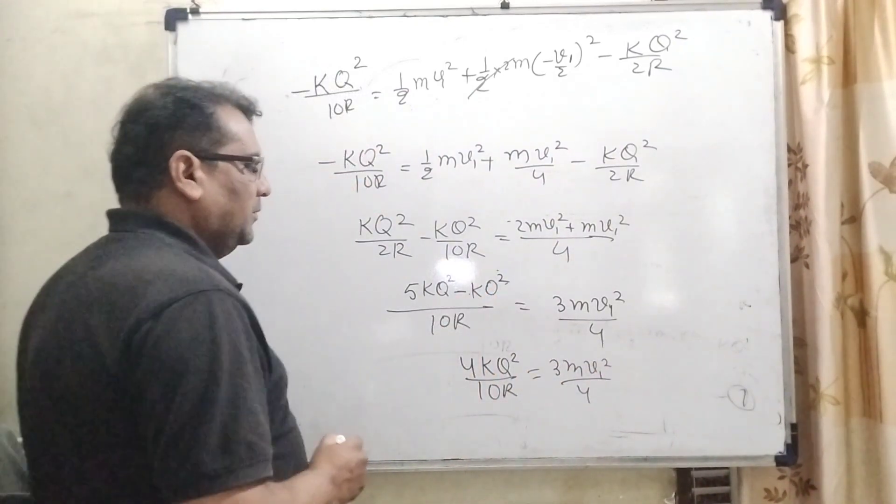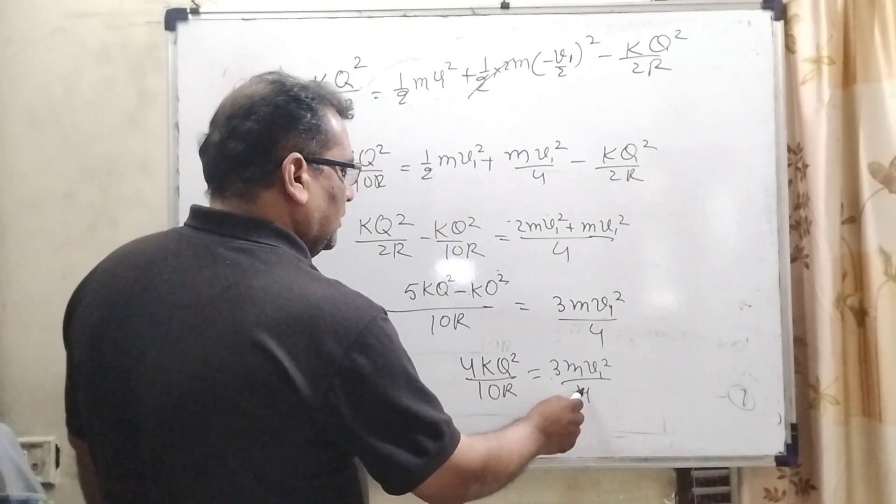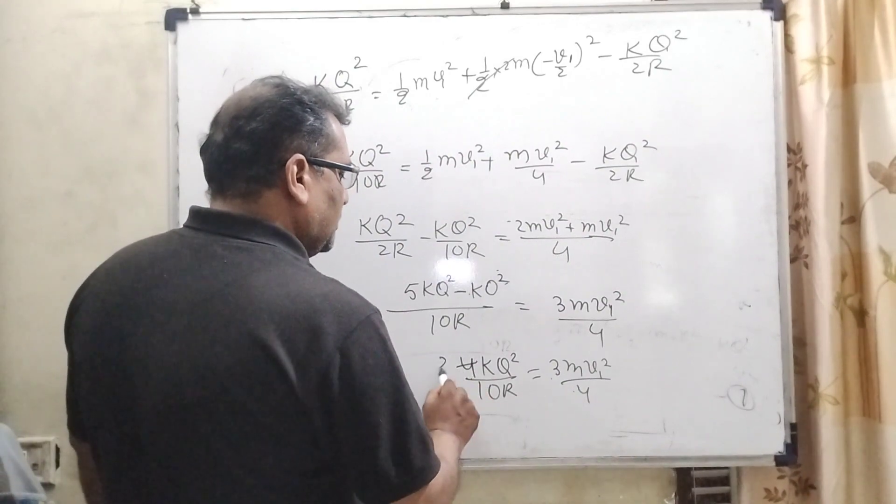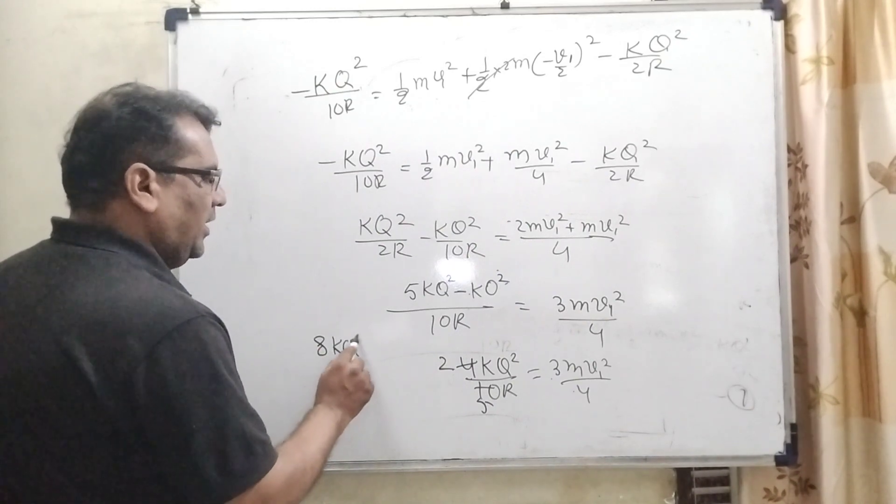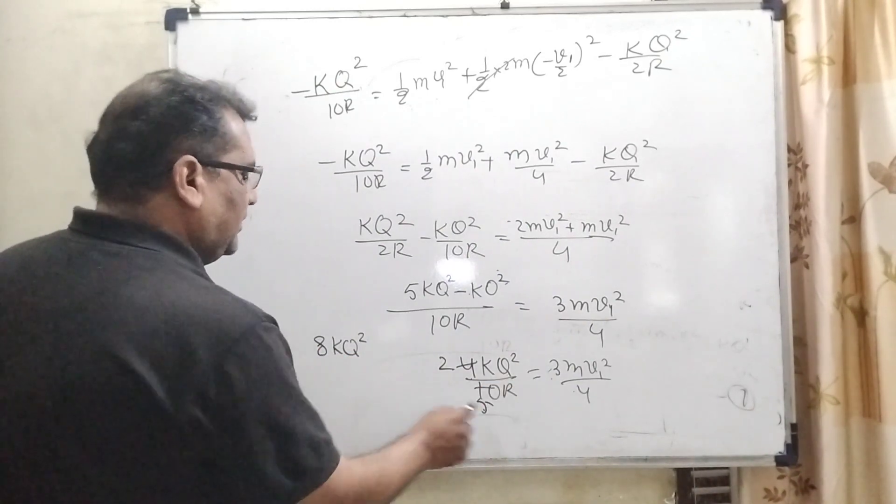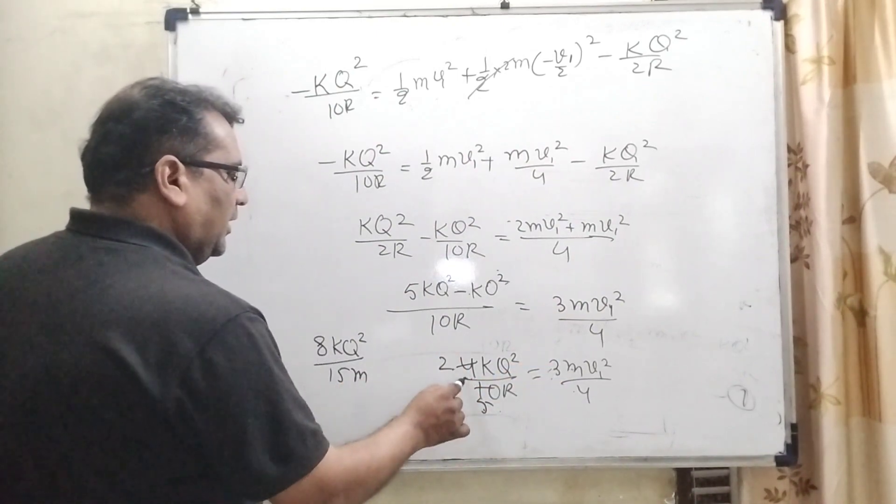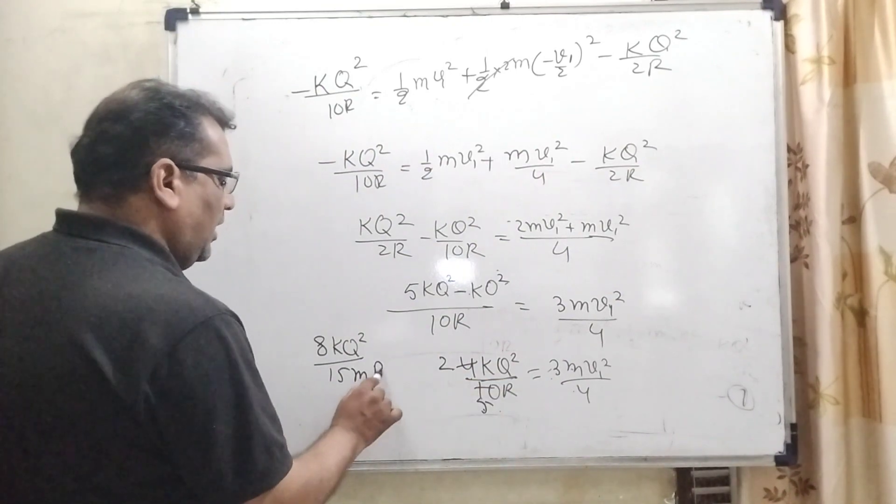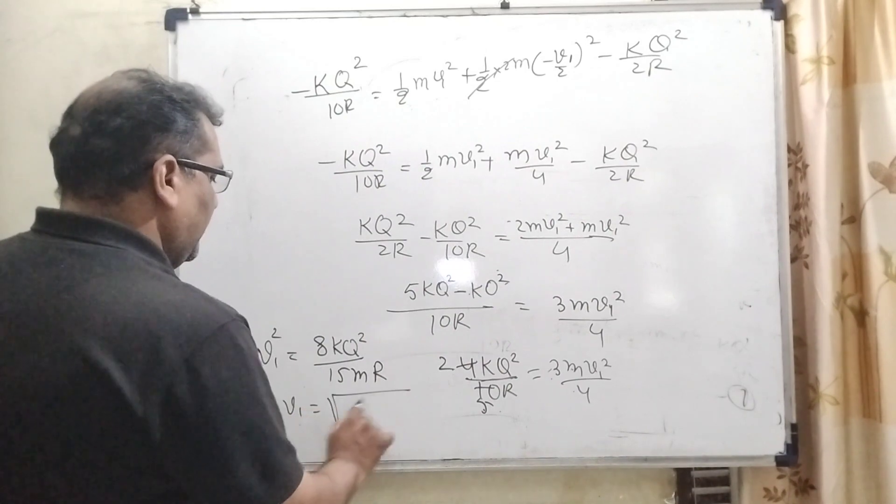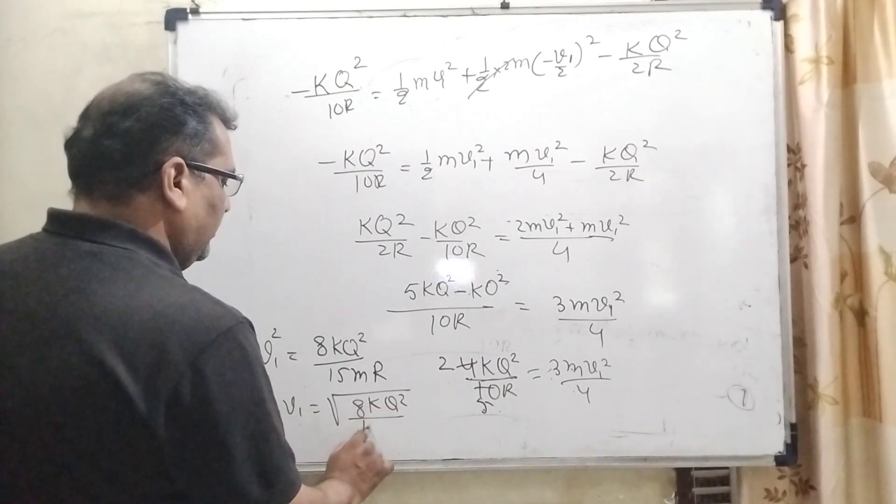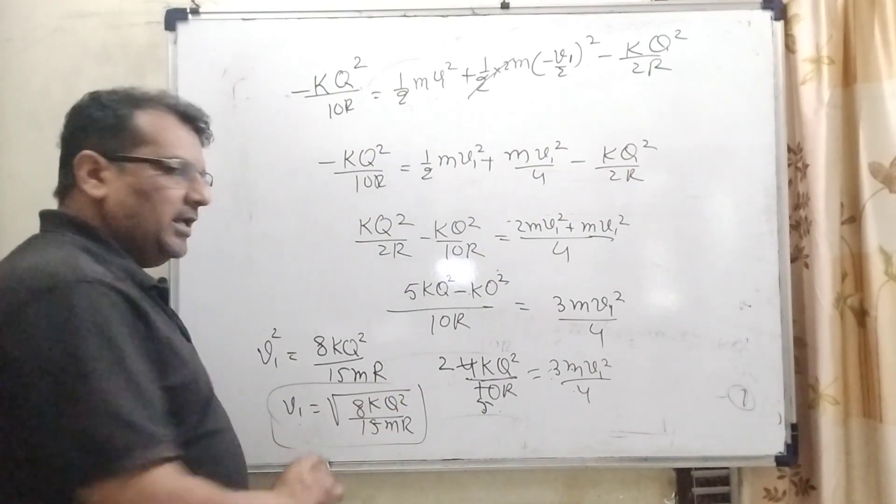Here, we have to find out V1. So, here, 2 to the 4, 2, 5s are 10, then 4 to the 8, KQ square and 5 and 10, 15, M is also transposing here and goes in denominator MR that is V1 square. So, V1 can be written as root 8KQ square upon 15MR. So, this is the answer.